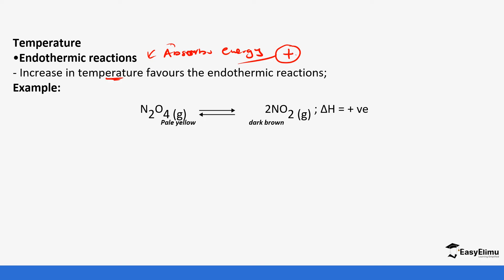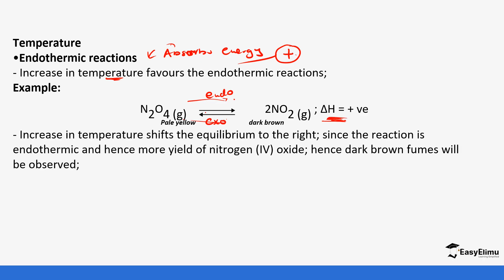For example, dinitrogen tetraoxide can decompose to form nitrogen dioxide gas — this reaction can go forward and backwards. If you look at this reaction, the forward reaction has a positive energy change — that's the endothermic process. The more you increase temperature, the more the forward reaction is favored. If you decrease the temperature, the back reaction is favored. The back reaction is exothermic. So increasing temperature shifts the equilibrium to the right since the forward reaction is endothermic, and more nitrogen dioxide will be formed.